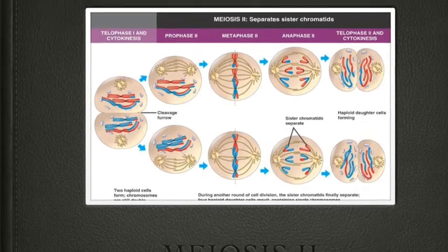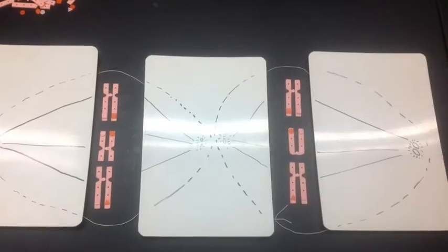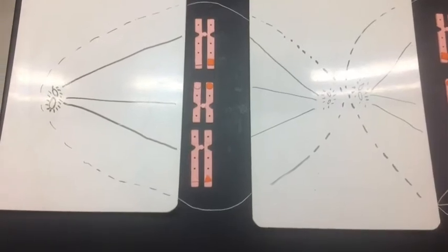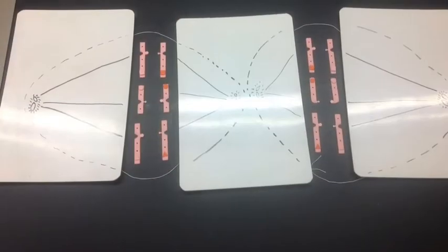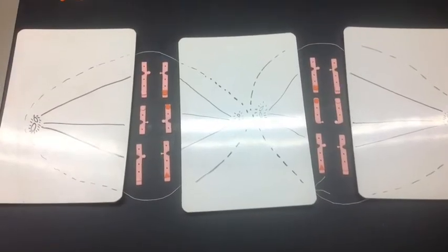Meiosis II. During prophase II, the nuclear envelope breaks down and a new spindle fiber forms. In metaphase II, spindle fibers bind to both sides of the centromeres.